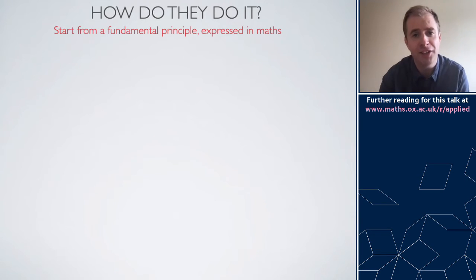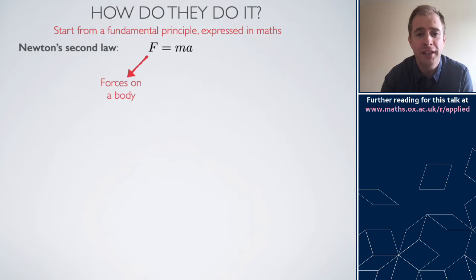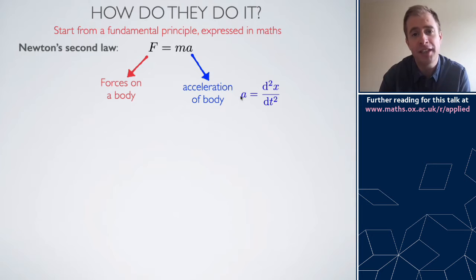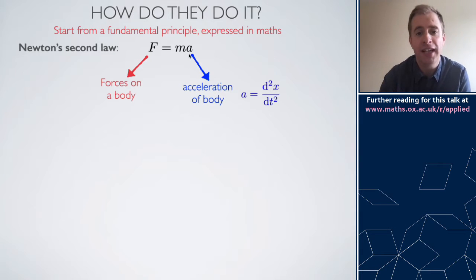I'll give you a concrete example using a principle you've probably seen at school: Newton's second law, which says the forces on a body F is equal to the mass times its acceleration. The acceleration of a body is the second derivative of its position with respect to time, and so Newton's second law allows you in principle to solve for the position X of a body if you know the forces on it and the mass.